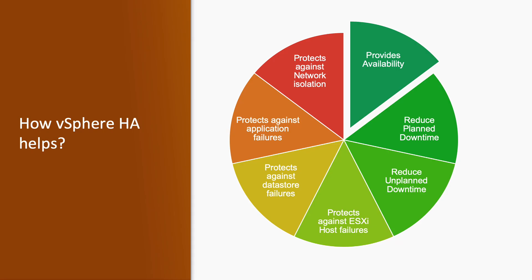How does vSphere HA help? It provides availability — if any hardware goes down, it will automatically failover the virtual machines to different hardware, so we are not dependent on any particular hardware. It also reduces planned downtime: if you want to perform maintenance on an ESXi host, you do not need to take the virtual machines down. Simply migrate all virtual machines to a different ESXi host and then perform the maintenance activity.